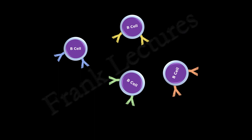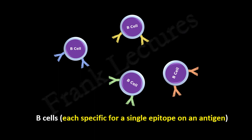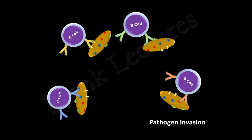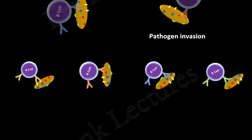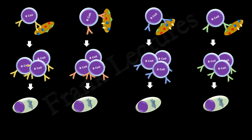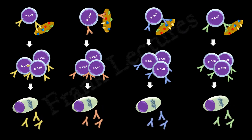We also said that B-cells of diverse specificities are circulating in our body. For our illustration, we will take four such B-cells. Each of these B-cells is specific for a single epitope on the antigen. So when there is an invasion by antigens, these B-cells recognize and bind to their specific epitopes and get activated. Each of these B-cells will proliferate and produce a large clone of cells, some of which will differentiate into plasma cells.